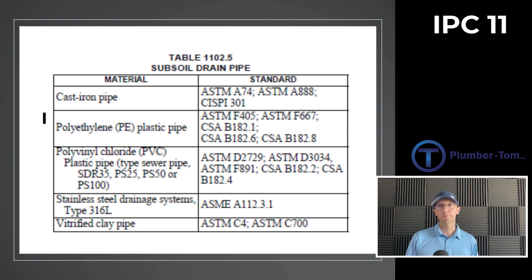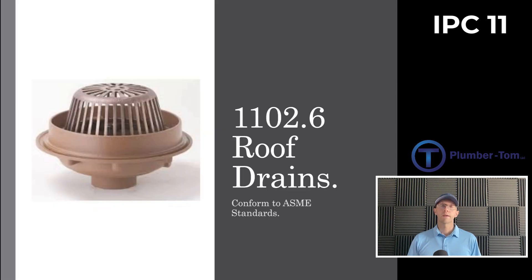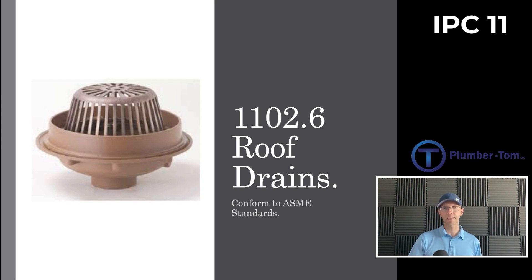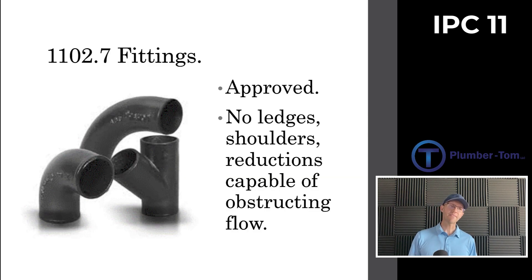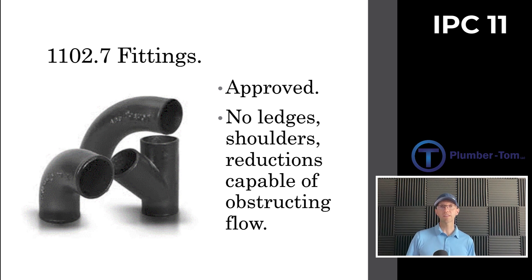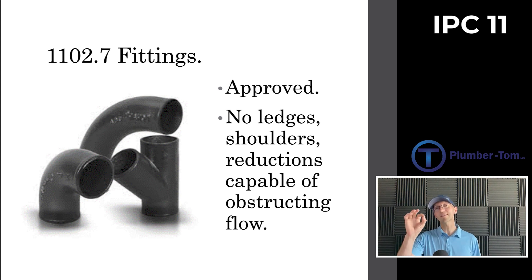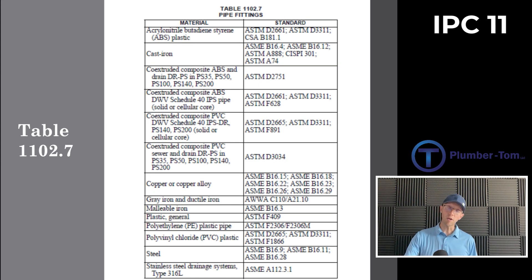Table 1102.5 gives us specific materials that can be used for subsoil drains. 1102.6 talks about the roof drains themselves — the bowl-shaped drains installed on the roof. These assemblies have to meet certain ASME standards, which is basically what that section covers. 1102.7 talks about fittings. Fittings have to be approved just like in Chapter 7, with no ledges, shoulders, or reductions capable of obstructing flow. With cast iron fittings, look them over for tar globs or manufacturing defects, and check for pinhole leaks — it's always less fun to find those after the system is full of water.